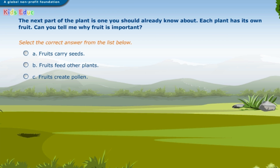The next part of the plant is one you should already know about. Each plant has its own fruit. Can you tell me why fruit is important? Select the correct answer from the list below. A. Fruits carry seeds. B. Fruits feed other plants. C. Fruits create pollen. Correct — fruits carry seeds.